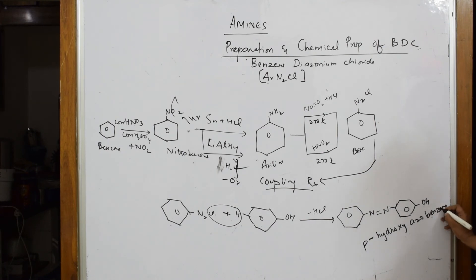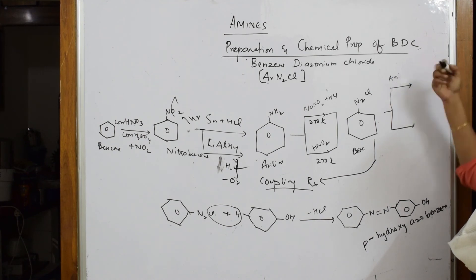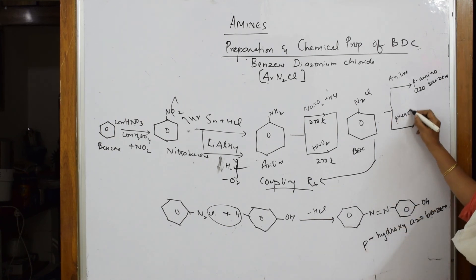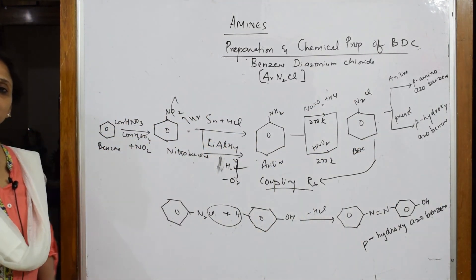This is your coupling reaction. BDC is going to form with aniline para amino azobenzene, and with phenol you are going to form para hydroxy azobenzene. Both are dyes, yellow and orange in color. This is how we show your azo coupling reaction. I will meet you again with the next set of reactions.